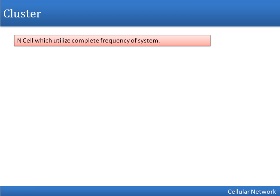In this video we will see how to calculate cluster size in a cellular network. In a cellular network, frequency is divided into cells, and a cluster is the number of cells which are completely utilizing the complete frequency of the system. If we assume we are having a frequency F, the number of cells completely utilizing that frequency is M, so M will be the cluster size.